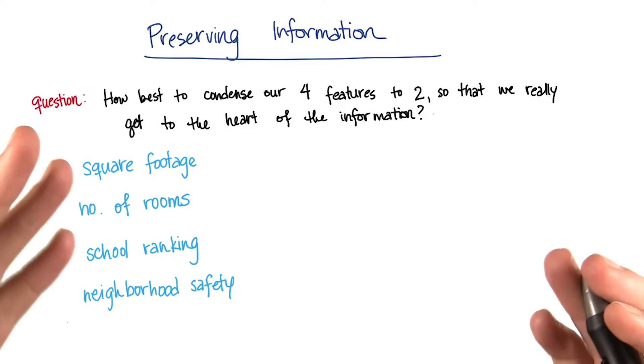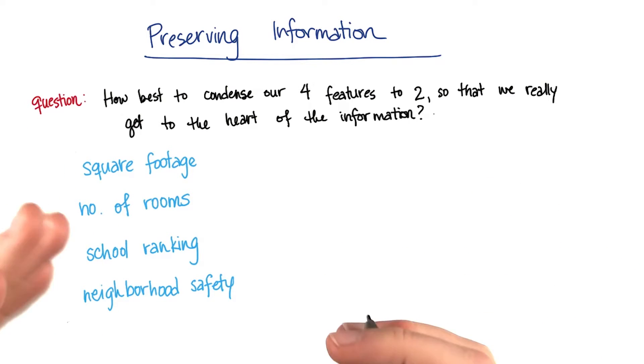So now that we know that we have potentially a large number of measurable features, but maybe a small number of underlying latent features that contain most of the information